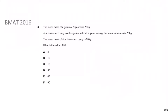This is really similar to the previous question, just a different scenario — a common BMAT idea. We know the mean of the group of n is 75, so the sum of the n people over n equals 75. Then three people join, so the new mean is the sum of the n people plus the sum of Jim, Karen and Leroy, all over n + 3, and that equals 78. The mean of those three is 90, so their total sum is 90 × 3 = 270.